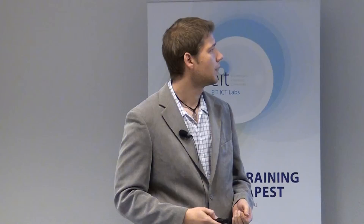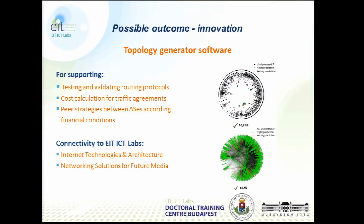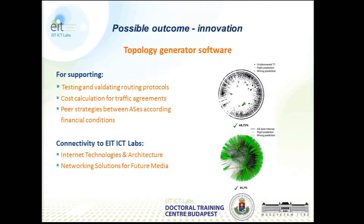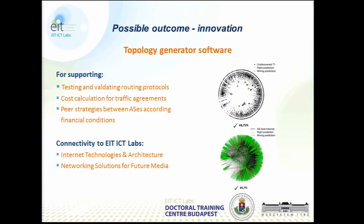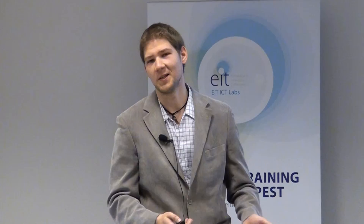The two pictures on the right side are from my current work. It is the result of my newly defined model, and it can produce networks which are realistic in some features. My motivations are quite simple: I have some academic background, and I hope that with the help of the EIT ICT Labs I can get some business background. I'm planning to pursue both an academic career and a business career at the same time.